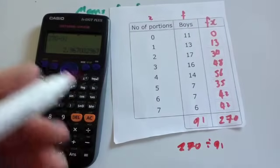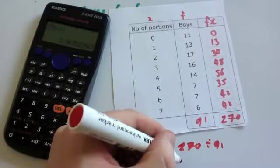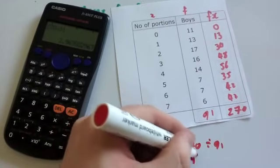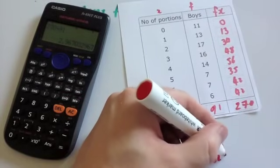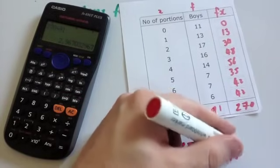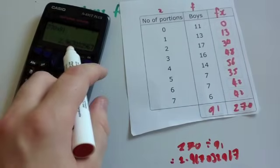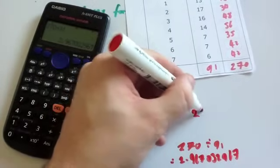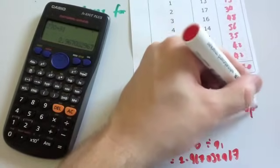So you do 270 divided by 91, and you get 2.967032967. I'm just going to round it to two decimal places. So that would be 2.97, to two decimal places.